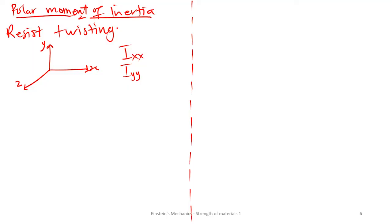We can represent the polar moment of inertia by the letter J, or we can also represent it by IP. I would prefer we stick to J, because in twisting and in bending we are going to encounter this J, so that you don't confuse yourself. We are not going to use IP — we are going to stick to J. So, J is the polar moment of inertia of a body. Let's write down the formula.